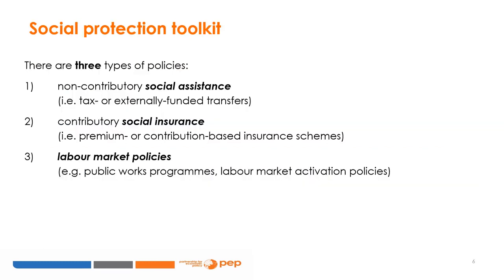We can understand the remit of social protection better by looking at the types of interventions included. They are commonly divided into three main categories: social assistance, social insurance, and labor market interventions. Social assistance includes interventions that provide basic transfers, mostly associated with the objectives of protection. They are also referred to as non-contributory, as one doesn't have to pay into the scheme to get support. Examples include cash transfers and school feeding programs.